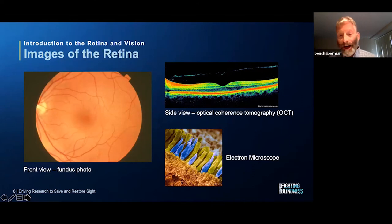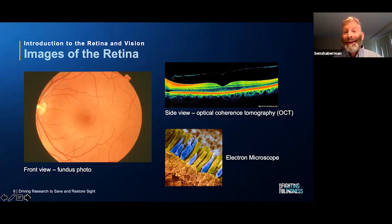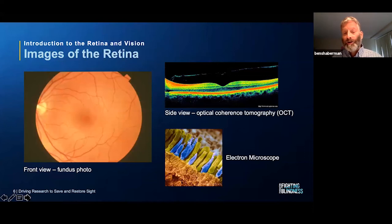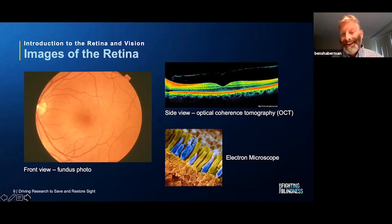Finally, in the bottom right corner of this slide is an electron microscope image of rods and cones. This is not something your eye doctor has in his or her office — it's very special technology — but it shows impressive images of rods and cones. The rods are the light lime-green cells, and nestled within those are the cones, which are the deep purple shorter cells in this image.